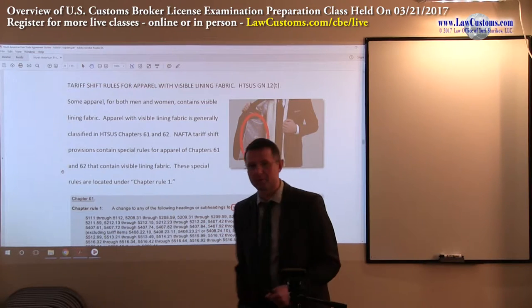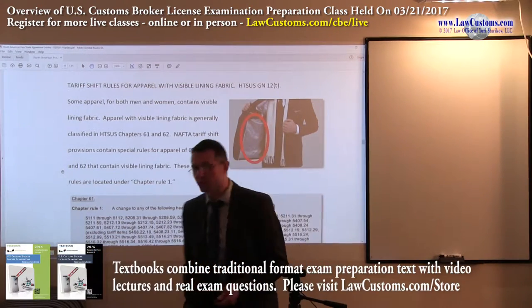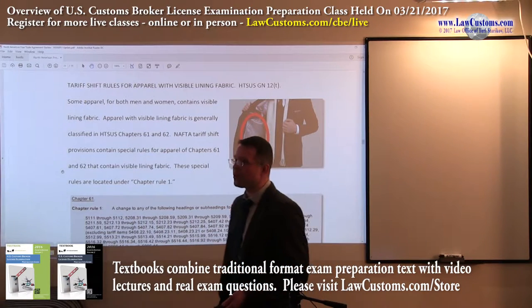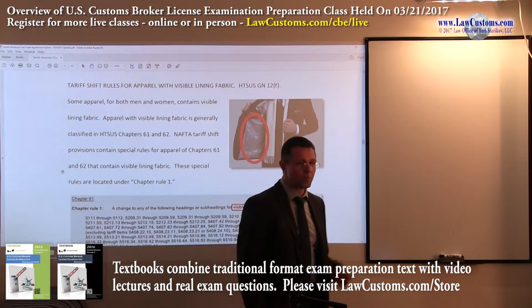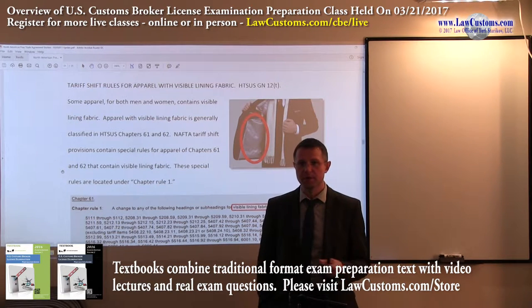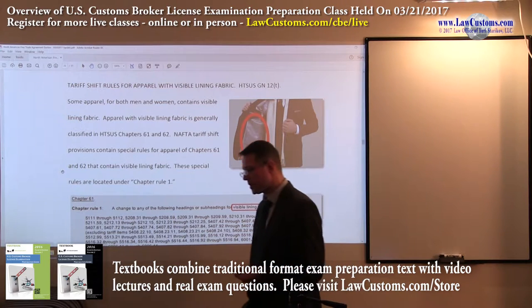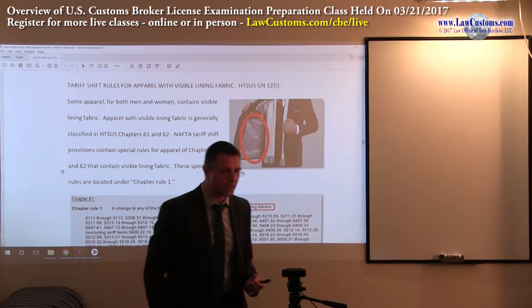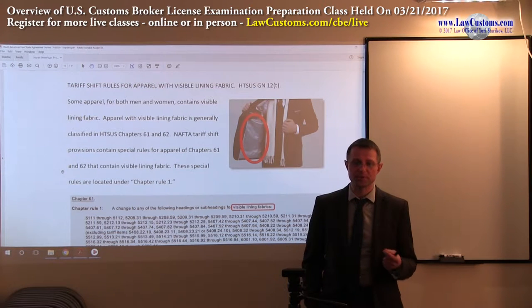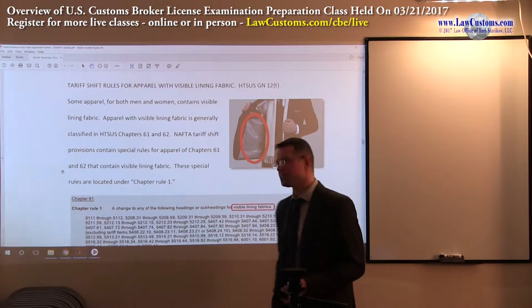We are still on NAFTA, the North American Free Trade Agreement, and we are discussing the very important topic of tariff shifting, which is generally located under the HTS-US General Note 12T. It is also located under Part 102 of the Code of Federal Regulations. Part 102 deals with marking, and General Note 12T deals with what I call the substantive part of the qualification criteria. In most cases, both criteria must be met. On the customs broker exam, most questions will deal either with General Note 12T tariff shifting or with Part 102 marking tariff shifting requirements.